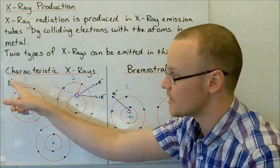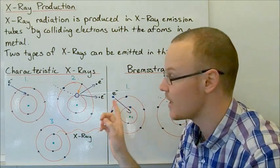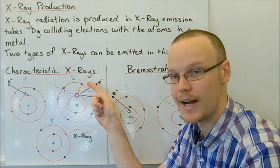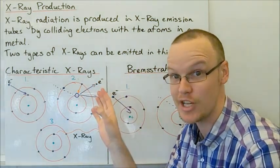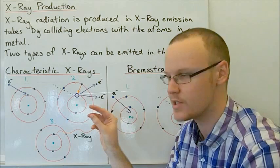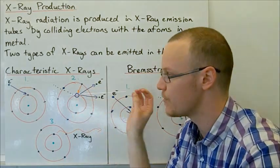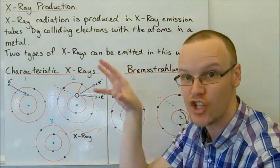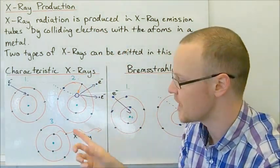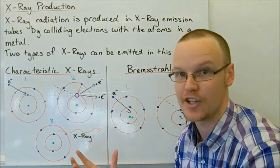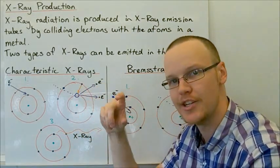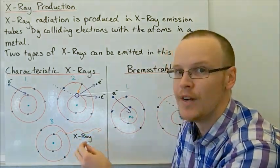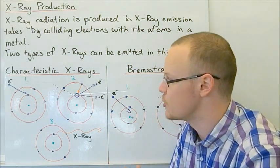So once again, the stages: the electron comes in, knocks out an electron in a lower shell. An electron at a higher energy level, in a higher quantum state, drops down to fill the void. In that process — that energy level change, that change in quantum state — it emits an X-ray. The actual difference in the energy levels is the energy that the X-ray will have, in order to satisfy conservation of energy.